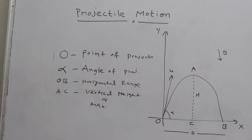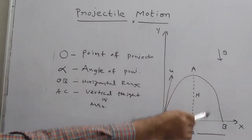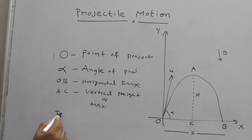Now, the time taken by the particle in the described path OAB, the time taken by the particle in the described path OAB, is called time of flight.